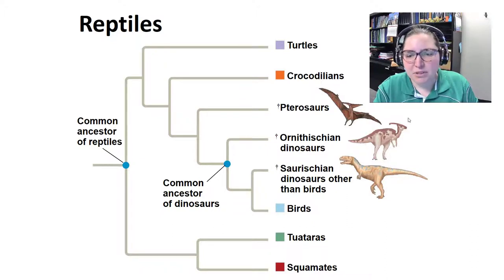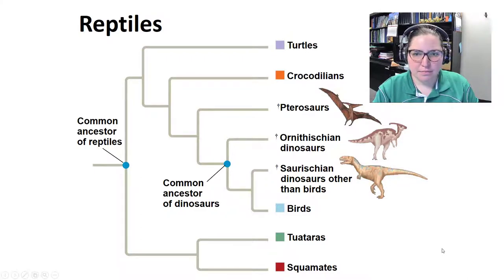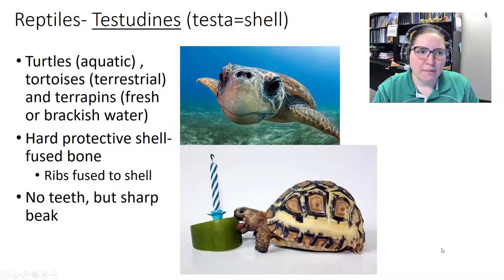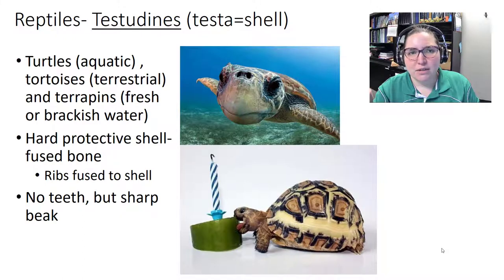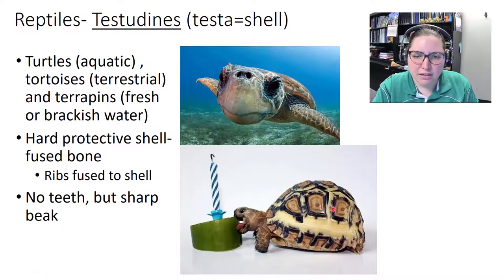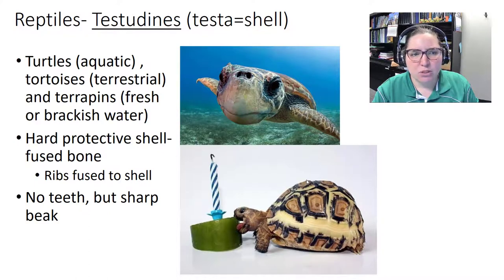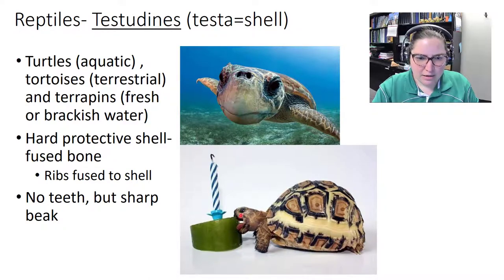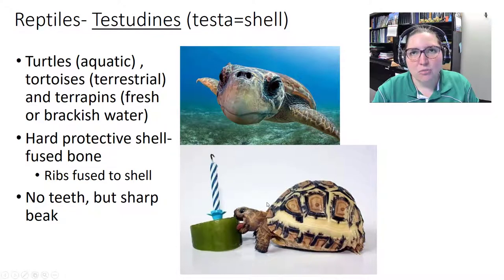Birds are lumped with reptiles because they share a common ancestor. Within reptiles: Testudines have a hard protective shell with ribs fused to it, no teeth but a sharp beak — this includes aquatic turtles, terrestrial tortoises, and freshwater or brackish terrapins.